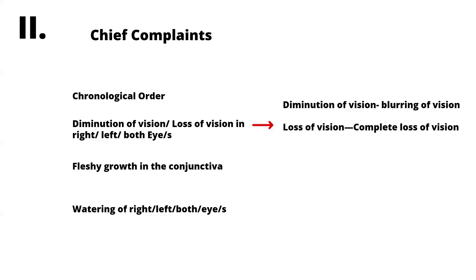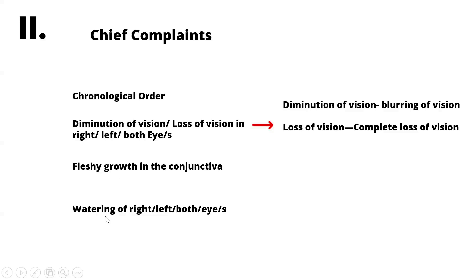Regarding diminution of vision, note whether it is in the right, left, or both eyes — and make a distinction: diminution of vision means blurring of vision, while loss of vision means complete loss. A patient can also present with a fleshy growth in the conjunctiva in case of pterygium, watering in the right or left eye as in dacryocystitis, or swelling in the lids. These are the most common symptoms covered in this video; other conditions will be covered in separate videos.